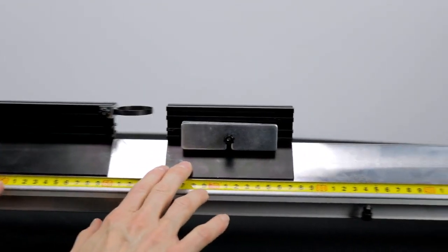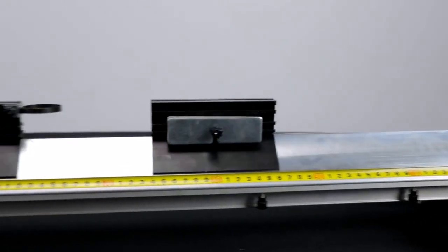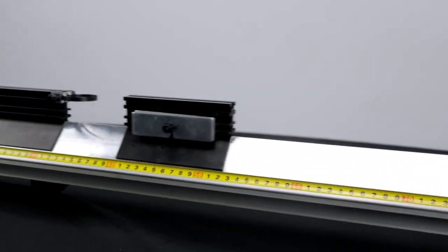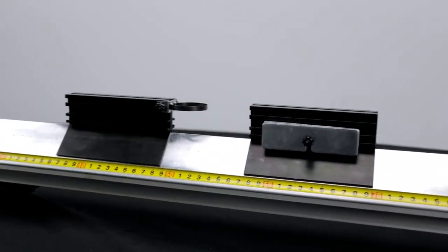Now, repeat the same procedure, this time switching the carts. Notice that the velocity is higher when the more massive cart collides with the smaller cart, than when the smaller cart collides with the more massive cart.